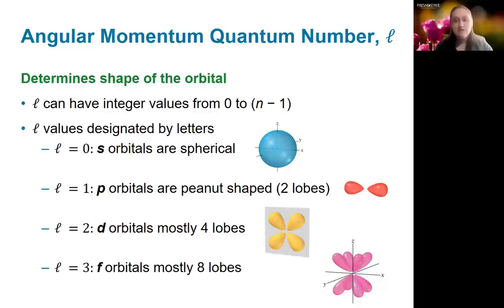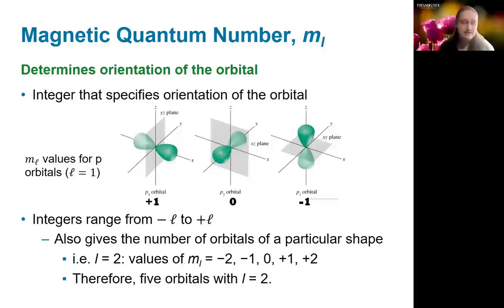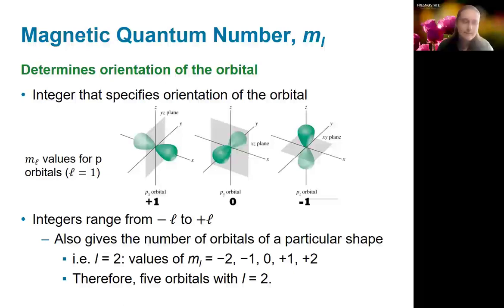The magnetic quantum number m sub l determines the orientation of the orbital — which direction it is pointing. For p orbitals where l equals 1, there are three possible values for m sub l: negative 1, 0, or 1. In general, the possible values are integers from negative l to positive l. This also lets us determine the number of orbitals of any given shape, since the number of m sub l values corresponds to the number of orbitals.